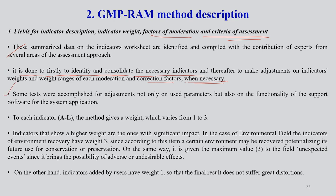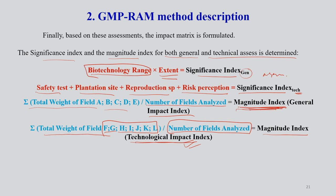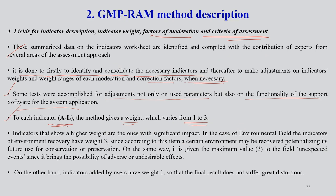Remember that to each indicator A to L, the method gives a weight which varies from 1 to 3. The first set of indicators for magnitude index general impact index is A to E, and then the second set F to L is for the magnitude index technological impact index estimation. So for indicators A to L, we give some weight to each one, and that value varies from 1 to 3.